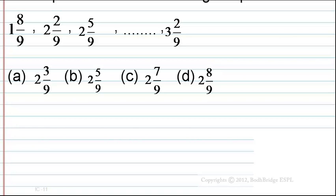We have 4 options: Option A is 2 and 3/9, Option B is 2 and 5/9, Option C is 2 and 7/9, and Option D is 2 and 8/9.